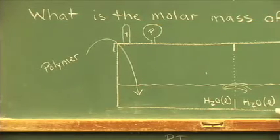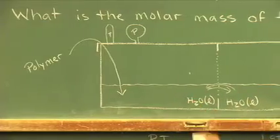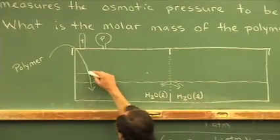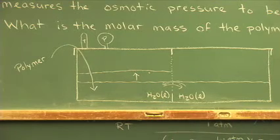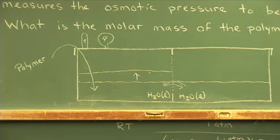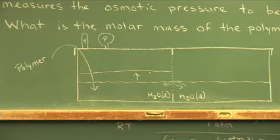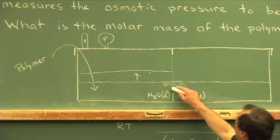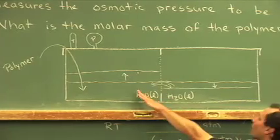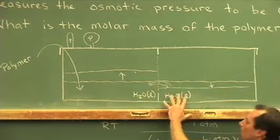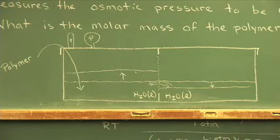By having the polymer in on the left side, the water travels more from the right to the left, trying to dissolve the polymer. So the water level on the left side actually increases. The water level on the right side actually decreases. There is more water on this side than on this side because the water tries to dissolve the polymer.